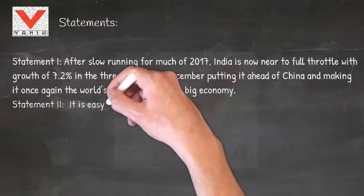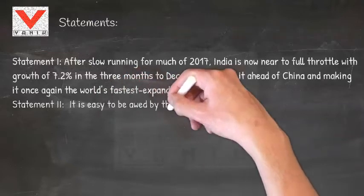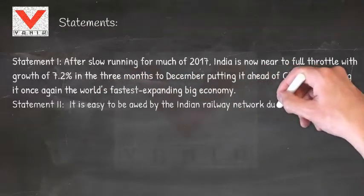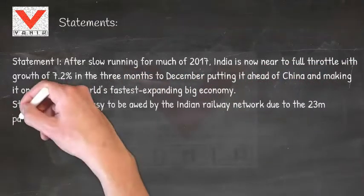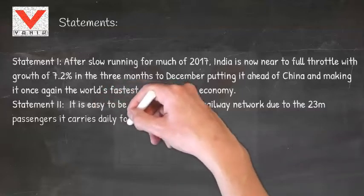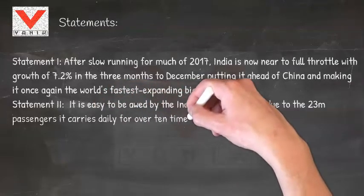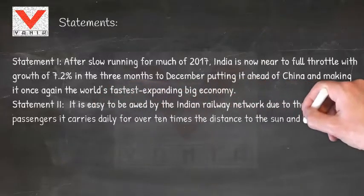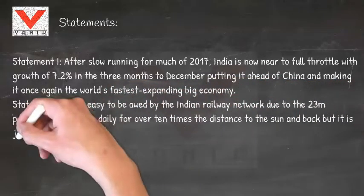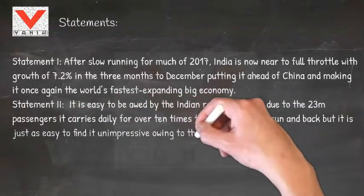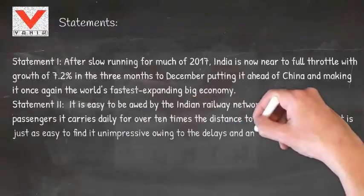Statement 2: It is easy to be awed by the Indian railway network due to the 23 million passengers it carries daily for over 10 times the distance to the sun and back, but it is just as easy to find it unimpressive owing to the delays and antiquated trains.